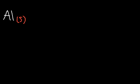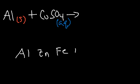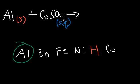Now consider aluminum metal reacting with copper sulfate. Will this reaction work? On the activity series, aluminum comes before zinc, Fe, nickel, hydrogen, and then copper. Aluminum is definitely strong enough to displace copper out of solution, so yes — this reaction will work.